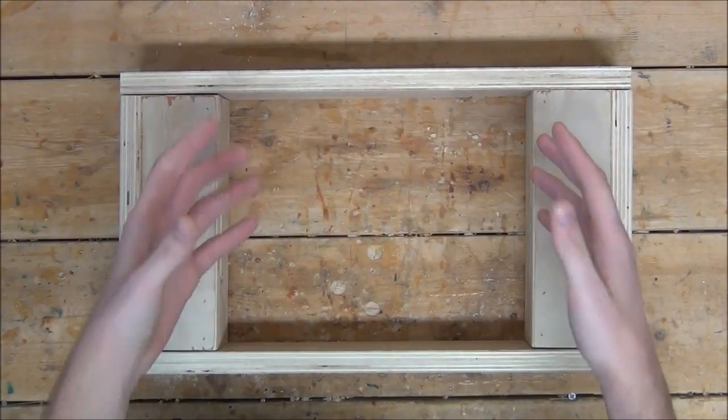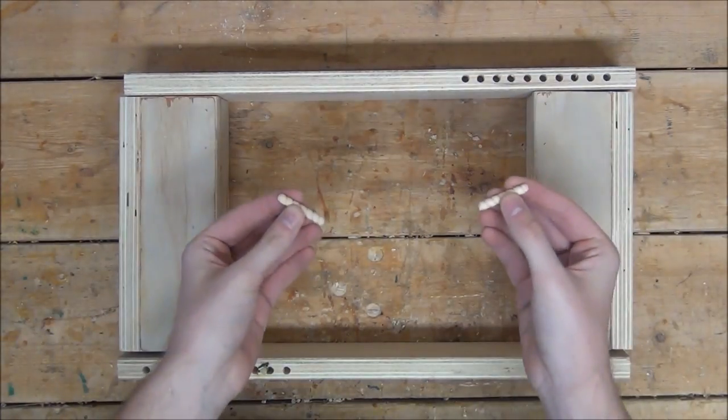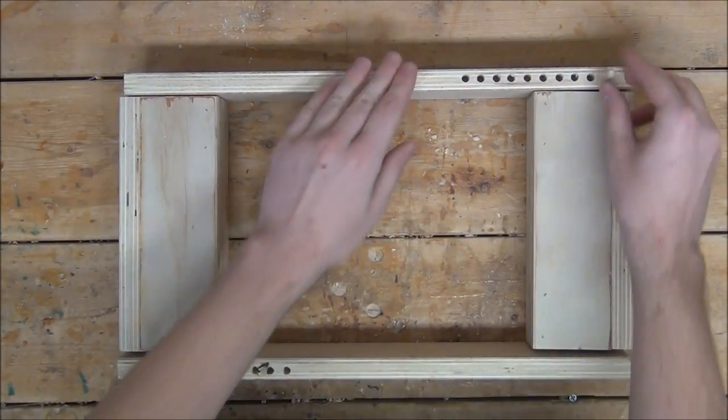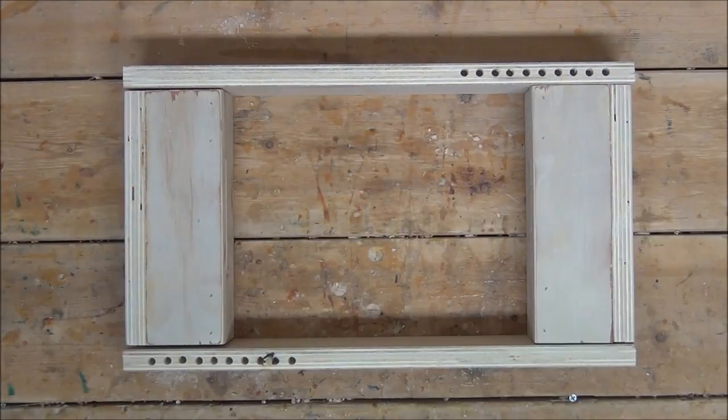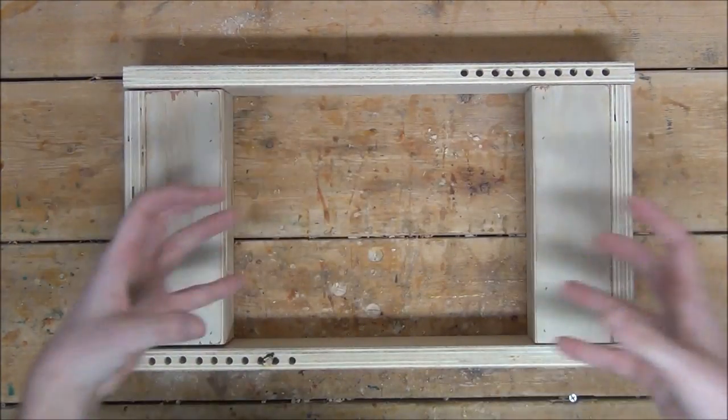I'm now going to drill 10 quarter inch holes onto one end of each sideboard, then place one quarter inch dowel into each side. This way, whenever someone makes a point, all you have to do is move the peg up one slot, and it'll help you keep score. With that complete, we can now go ahead and glue and nail all four of our frame pieces together.